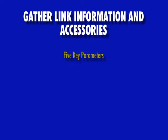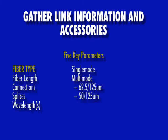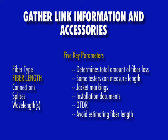There are five key parameters that apply to any fiber optic test. First is the fiber type, which will be either single mode or multimode. In the case of multimode, this could be either 62.5 or 50 micron. Next is fiber length. It is important to know how much fiber is in the link under test in order to determine how much loss is acceptable for that particular length of fiber.